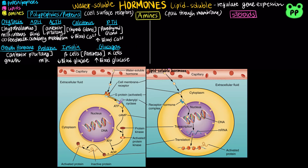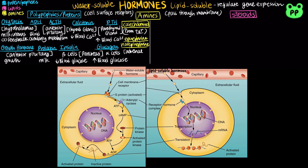Water-soluble amines include a class of hormones known as catecholamines, which are derived from tyrosine. Epinephrine and norepinephrine, also known as adrenaline and noradrenaline, are secreted by the adrenal medulla in response to stress, which increases metabolism.